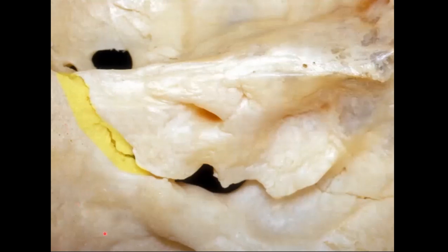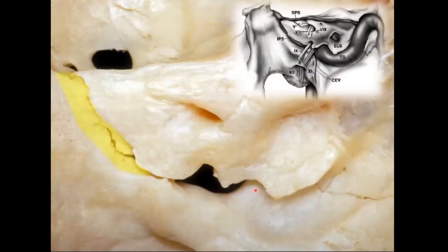Between the clivus and the petrous bone, they're connected by the petroclival fissure. At that junction we'll find the inferior petrosal sinus as it comes down on its course to the jugular bowl. We're also going to find the superior petrosal sinus running inside the tentorium along the petrous ridge.